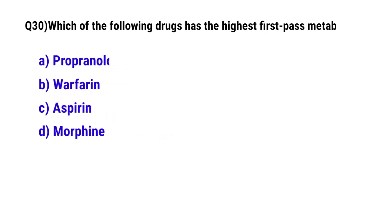Question number 30: Which of the following drugs has the highest first-pass metabolism? The correct option is D: morphine.